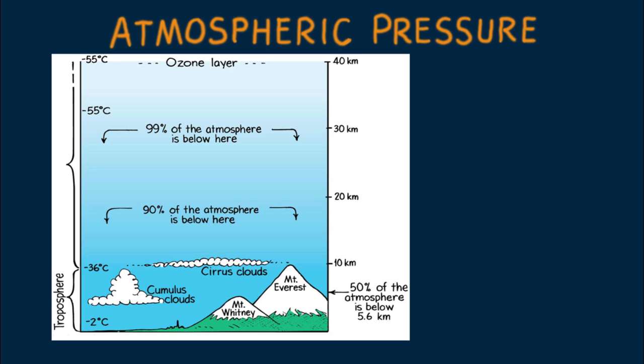Unlike water below a well-defined surface, an exact height of the atmosphere has no real meaning. Air gets progressively thinner and thinner the higher one travels upward. Eventually it thins out to emptiness and interplanetary space.